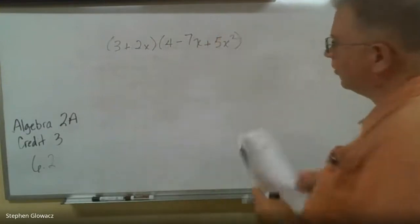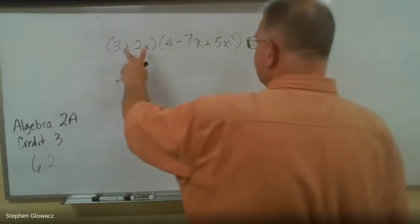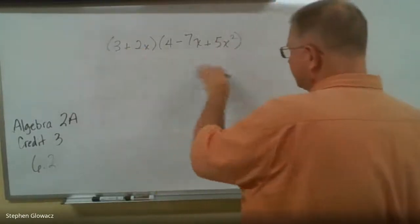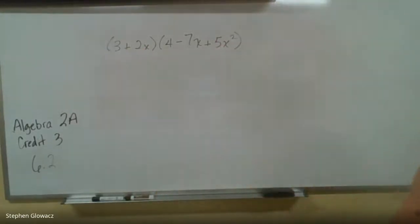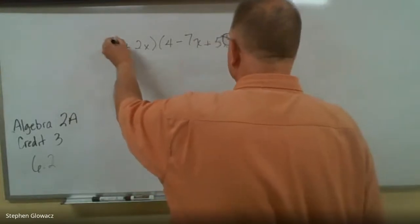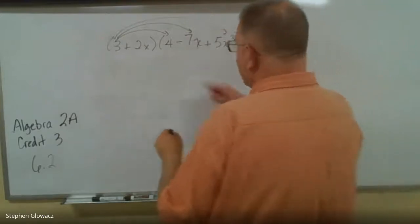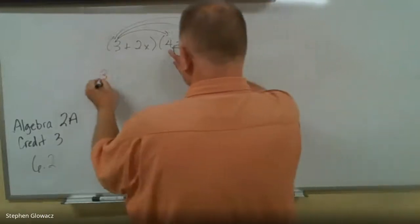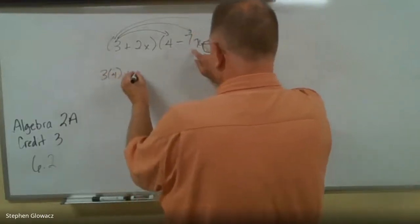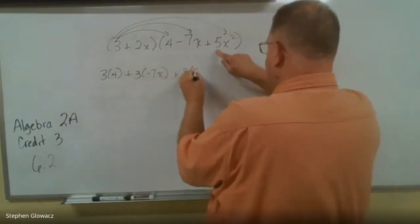When we're multiplying polynomials, we have to multiply everything in this parentheses times everything in this parentheses. It sounds like a lot, but it's actually pretty easy if you do it in a streamlined way. We're going to multiply this 3 to everything in the second parentheses: 3 times 4, 3 times negative 7x, and then 3 times 5x².